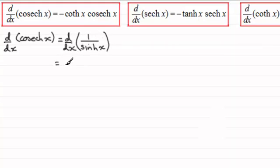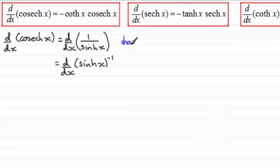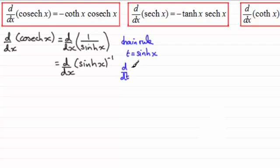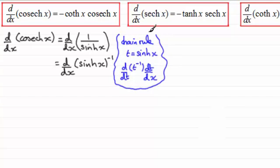I can rewrite this as differentiating with respect to x sinh(x) all to the power minus 1. To differentiate this I would need to use the chain rule, and you should be familiar with this by now and most probably should be able to do it in one go. But just as a reminder, I'll let t equal sinh(x), and that would mean that differentiating with respect to x is exactly the same as differentiating t to the power minus 1 with respect to t, as long as I multiply by dt/dx.